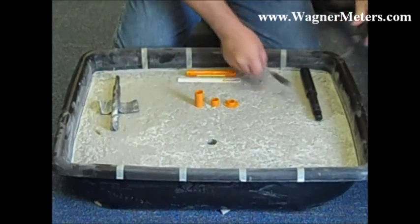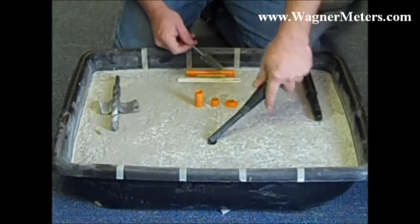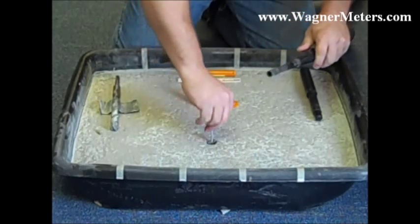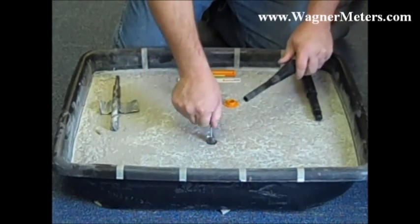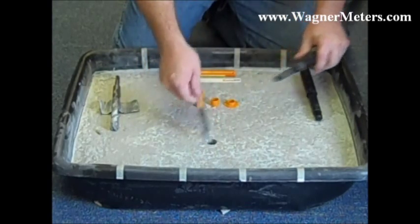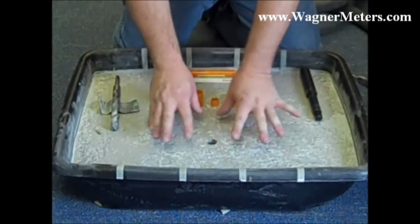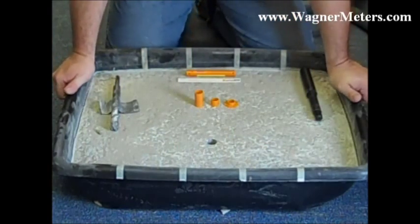After that, what you want to do is utilize the vacuum attachment. Drill or vacuum in and around the hole and also utilize the wire brush to ensure that you get the pulverized concrete off the hole. Big key here is to make sure that you have a clean surface to work from or on top of and within when you're inserting the sensor.